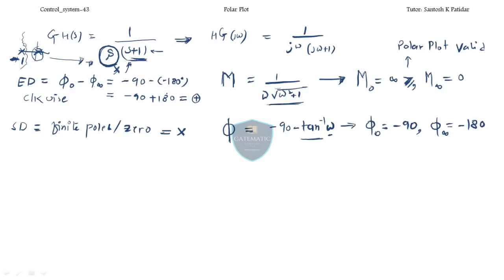So for this I cannot give the starting direction in the strict sense. However, since only poles are present and there are no zeros, there is no contradiction. Practically, we consider the direction to be clockwise because all terms are poles. Later I will tell you where this conflict becomes important.